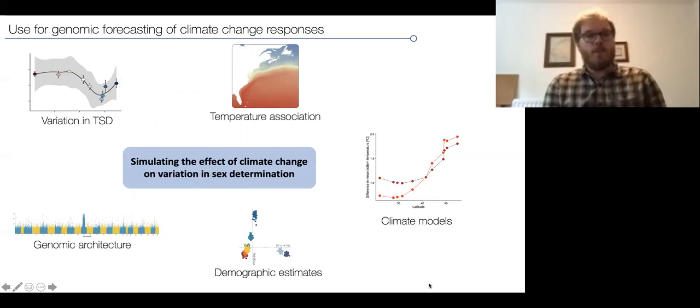Overall, we have all the puzzle pieces, from variation in the phenotype, to temperature data, climate models, demographic estimates, and the genomic architecture, which we can put together to model the effect of climate change on variation and sex determination, using this unusual system as a base, which can then be expanded, hopefully, to other species.